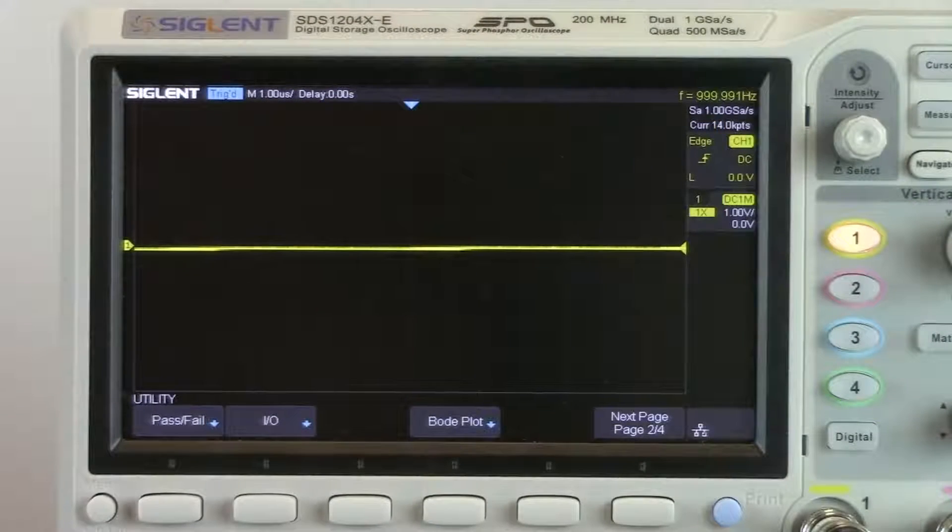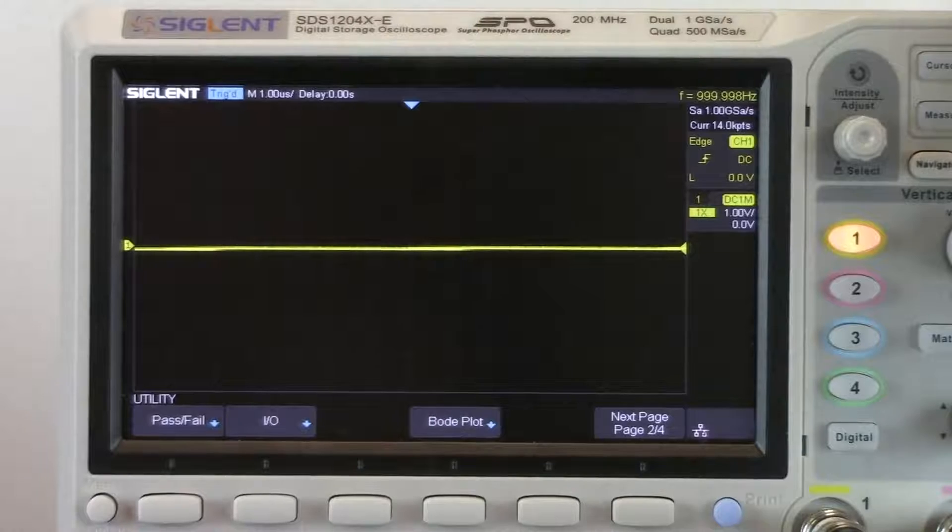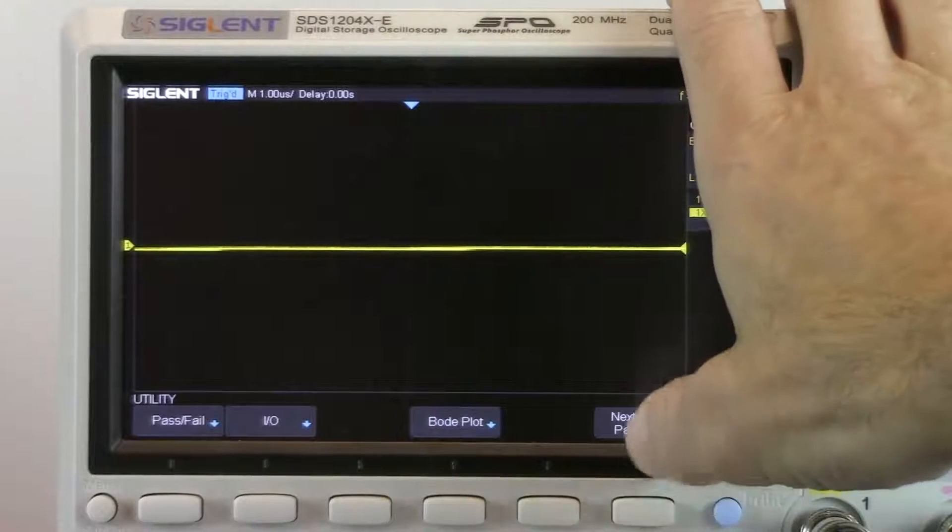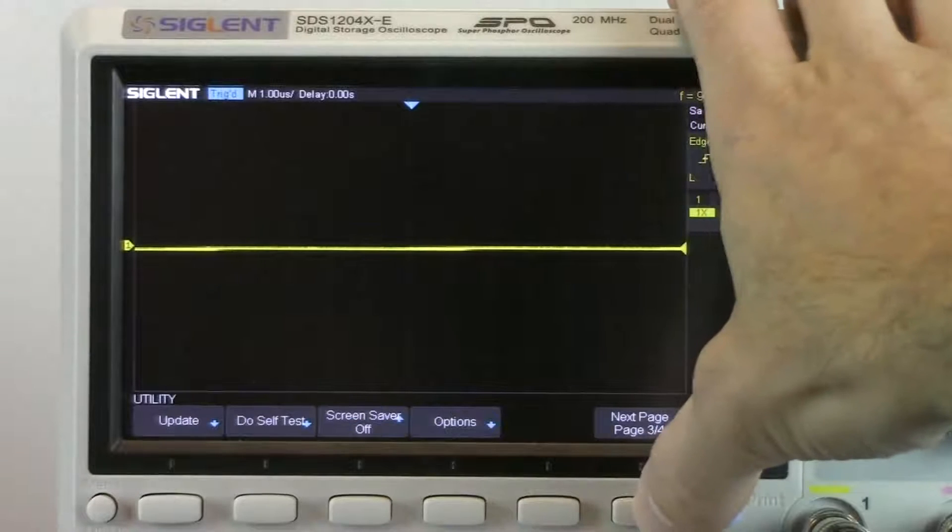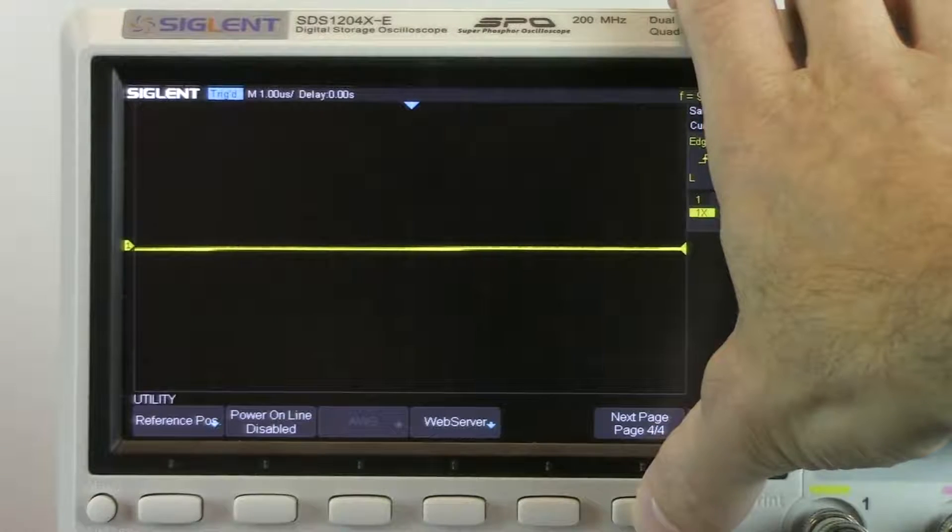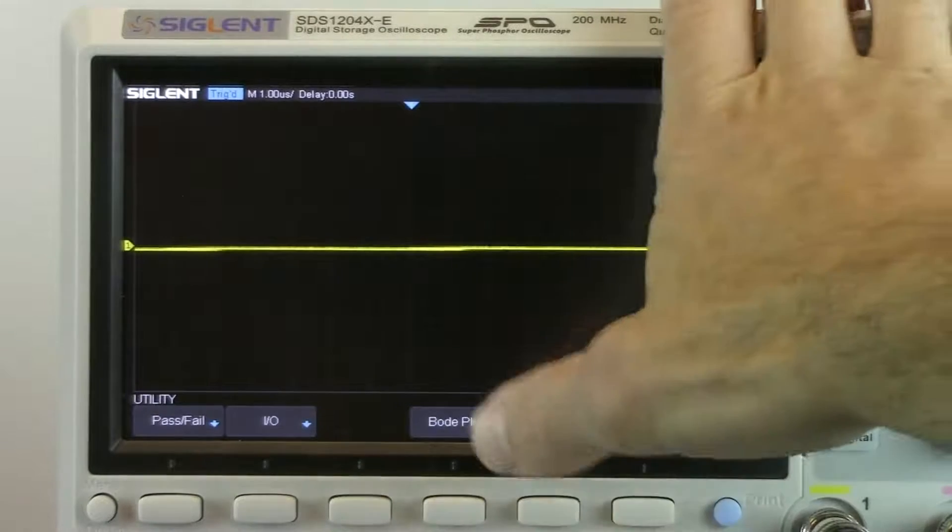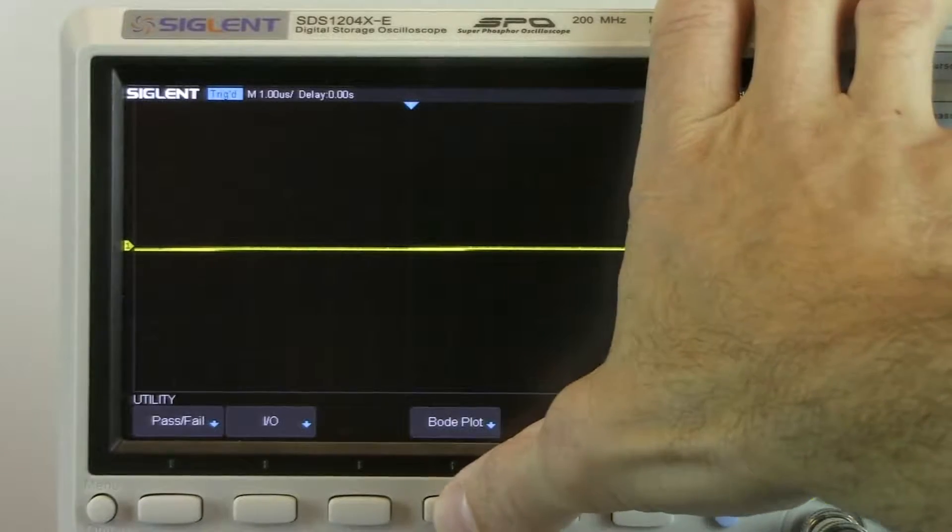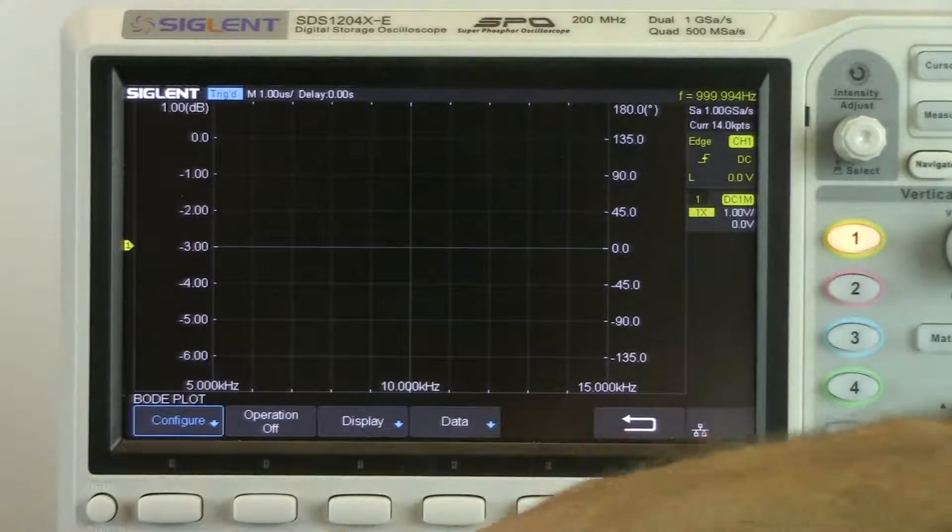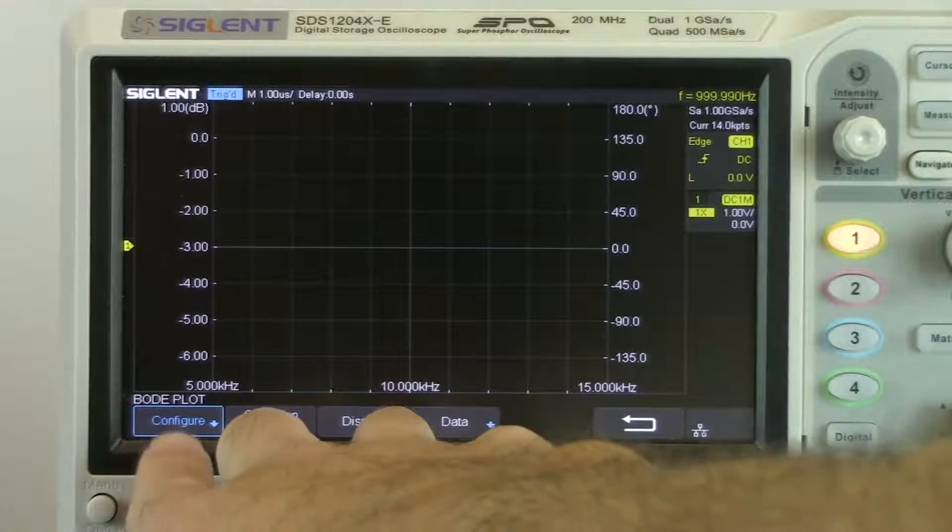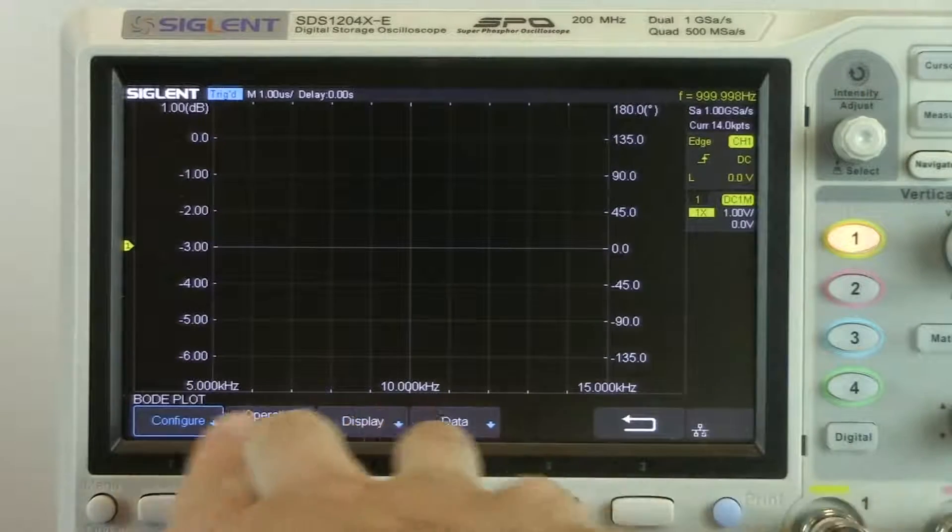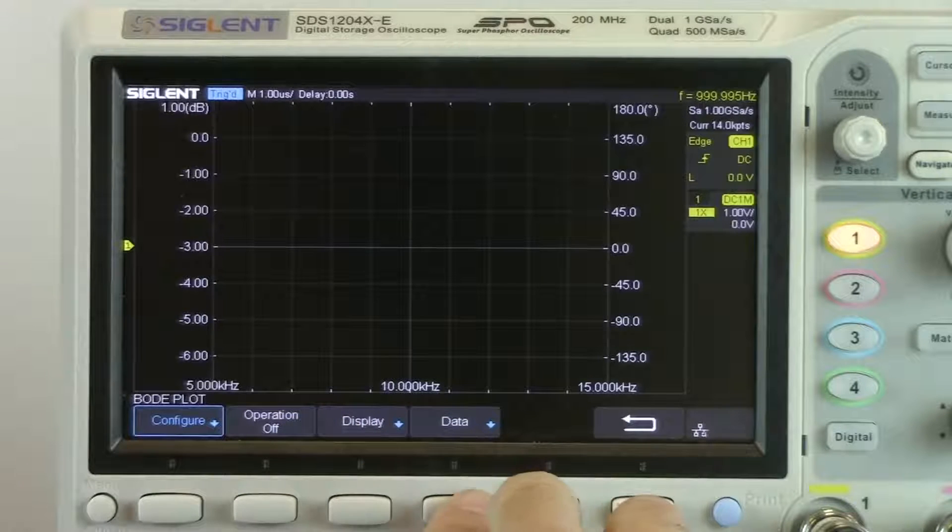Now that we've configured the SDG, we can move on to the oscilloscope and its configuration. So we want to press utility and press the next page until we get to Bode plot. And you can see it here, it's on page 2. So we'll just cycle through and now we're back to Bode plot. So now we've got pressing Bode plot. What that's going to do is change the display and give us another configuration menu. Here we've got configure, operation on and off, display, and data.